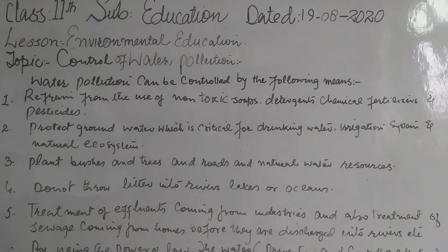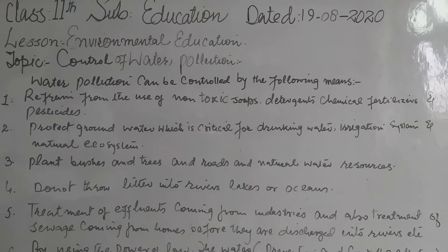Number two: protect groundwater, which is critical for drinking water, irrigation systems and natural ecosystems. If you are using chemicals that may be harmful to the environment, store them correctly. Improperly stored chemicals can slowly seep into the groundwater system, so keep them in tightly sealed containers inside structures with cement floors to avoid groundwater contamination.